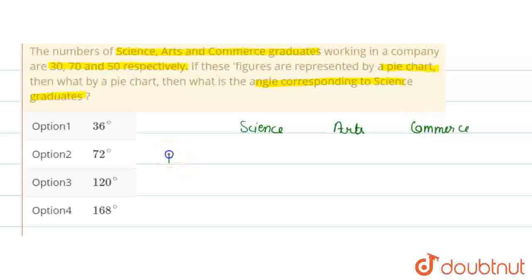Number of persons: science graduate 30, arts graduate 70, commerce 50.